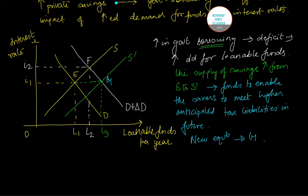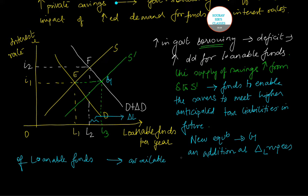So this new equilibrium is G. Now at this point, an additional del L, so to say this is marked as del L, rupees of loanable funds are made available per year. And this is done to finance the private investment.